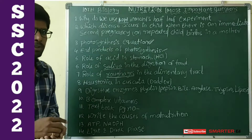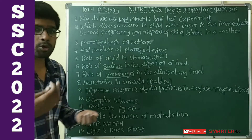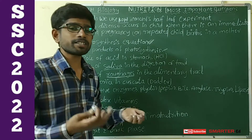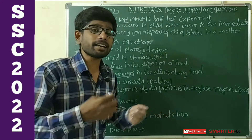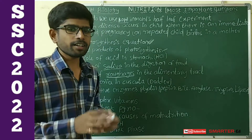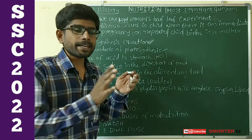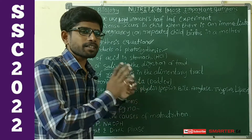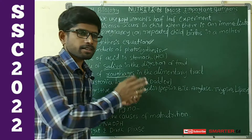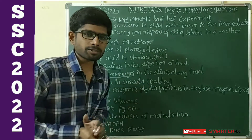Next, B-complex vitamins. What are the B-complex vitamins? They are B1, B2, B3, B6, and B12. These B-complex vitamins are very, very important and may also appear as four-mark questions.